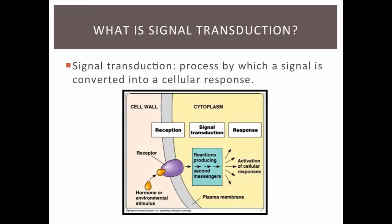Signal transduction is the process by which a signal is converted from an original binding of a ligand to the receptor into a cellular response, like turning on or turning off a particular gene. Remember, the three main steps of cell signaling are reception, which is when the ligand binds to the receptor; signal transduction, as that initial binding triggers other changes in other molecules; and then eventually that triggers some sort of cell response, like the turning on or turning off of a gene.